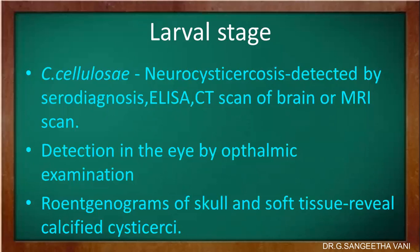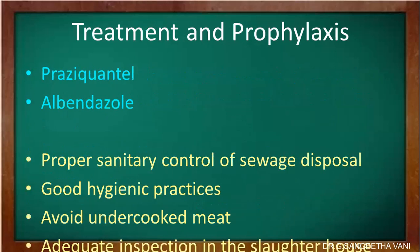Treatment: Praziquantel and albendazole are used; for cerebral cysticercosis, heterogen is the drug of choice. Prophylaxis is very important for prevention and control of the disease. Proper sanitary control of sewage disposal and good hygienic practices should be maintained. Undercooked meat should be avoided and there should be adequate inspection in the slaughterhouse.